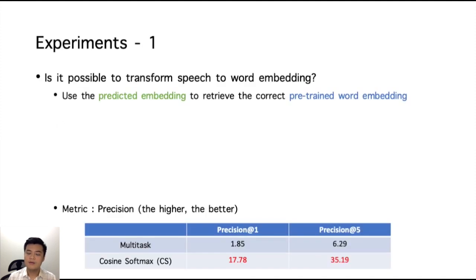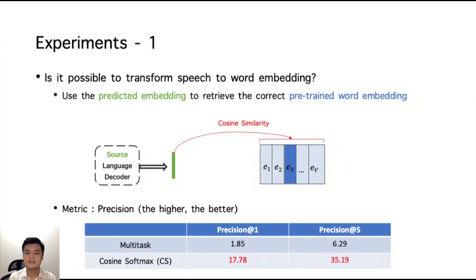We firstly verify if our proposed method can map speech signal to the pre-trained word embedding. We use the predicted word embedding, which is from the source language decoder, to retrieve the corresponding pre-trained word embedding using cosine similarity.